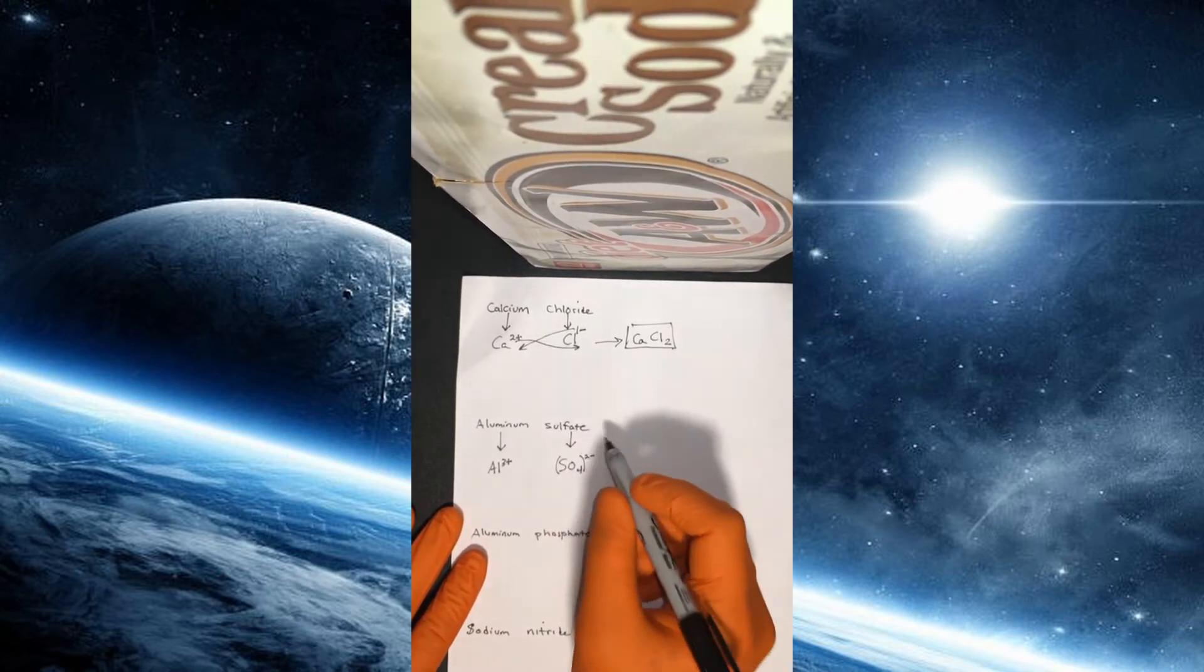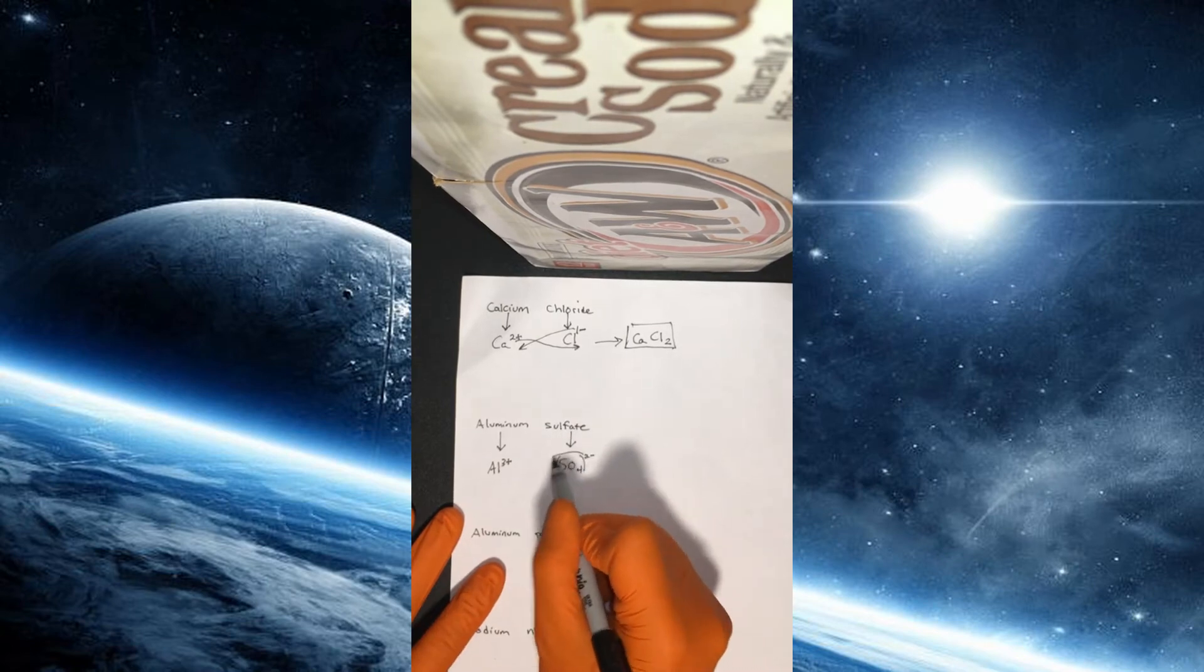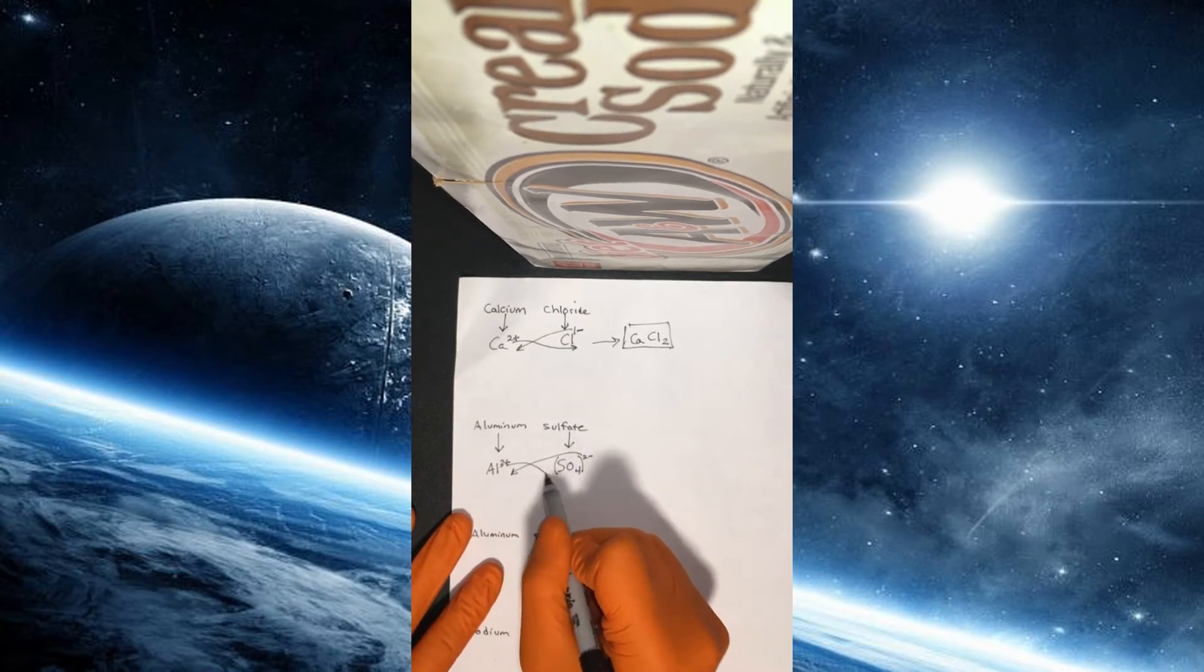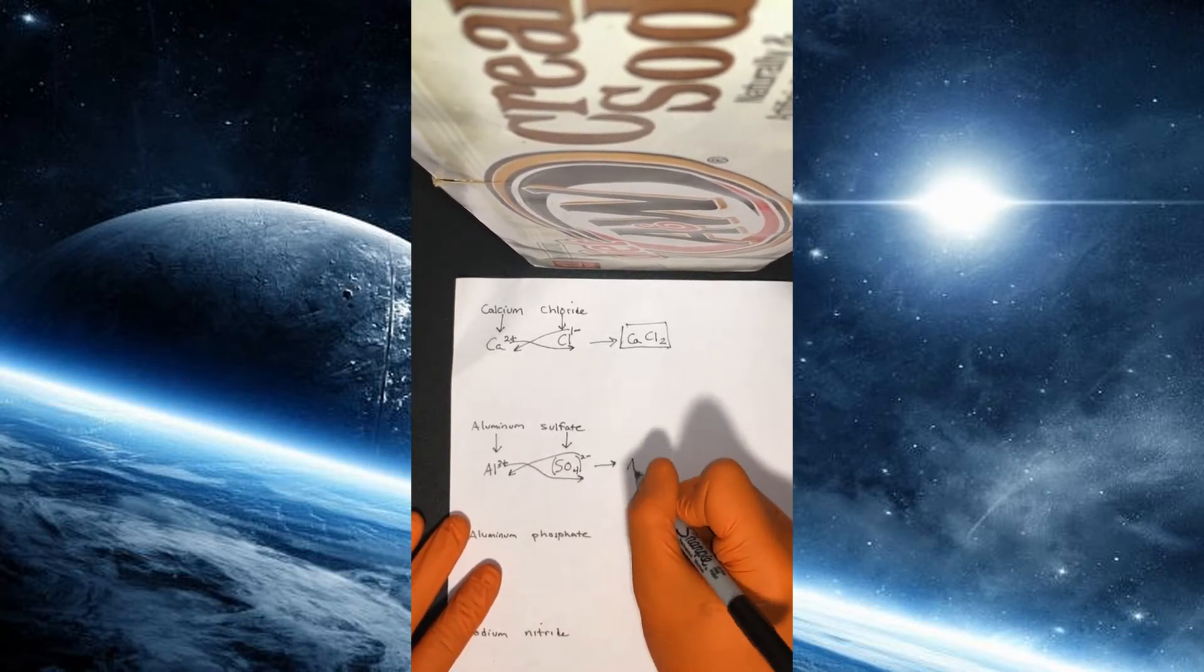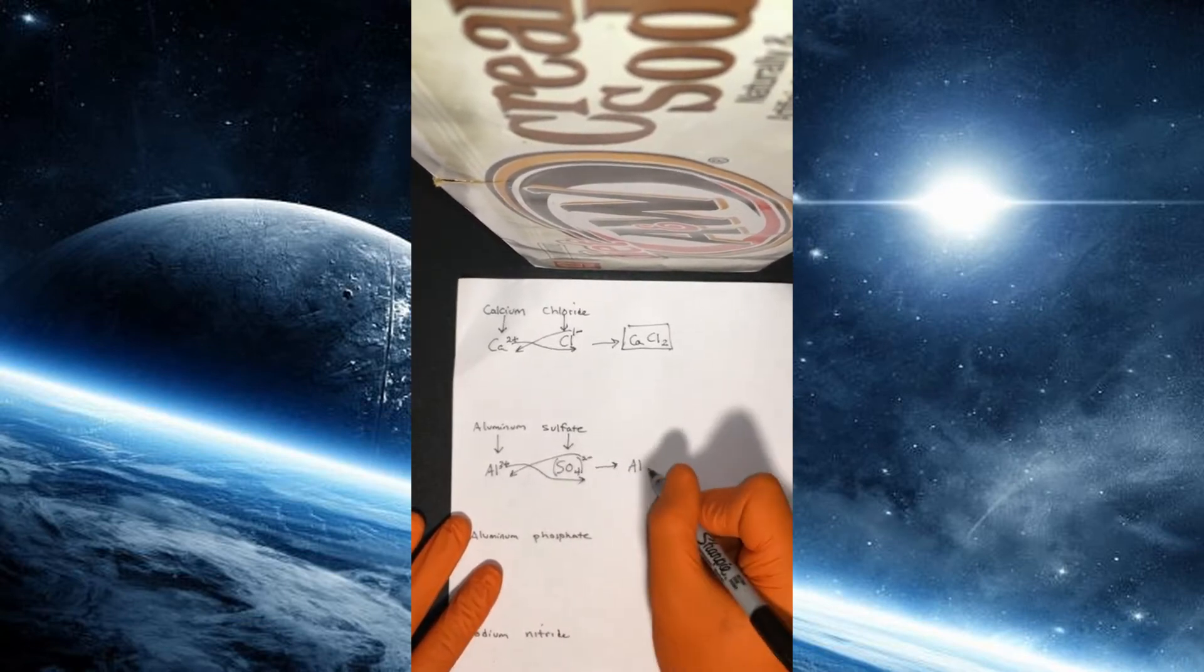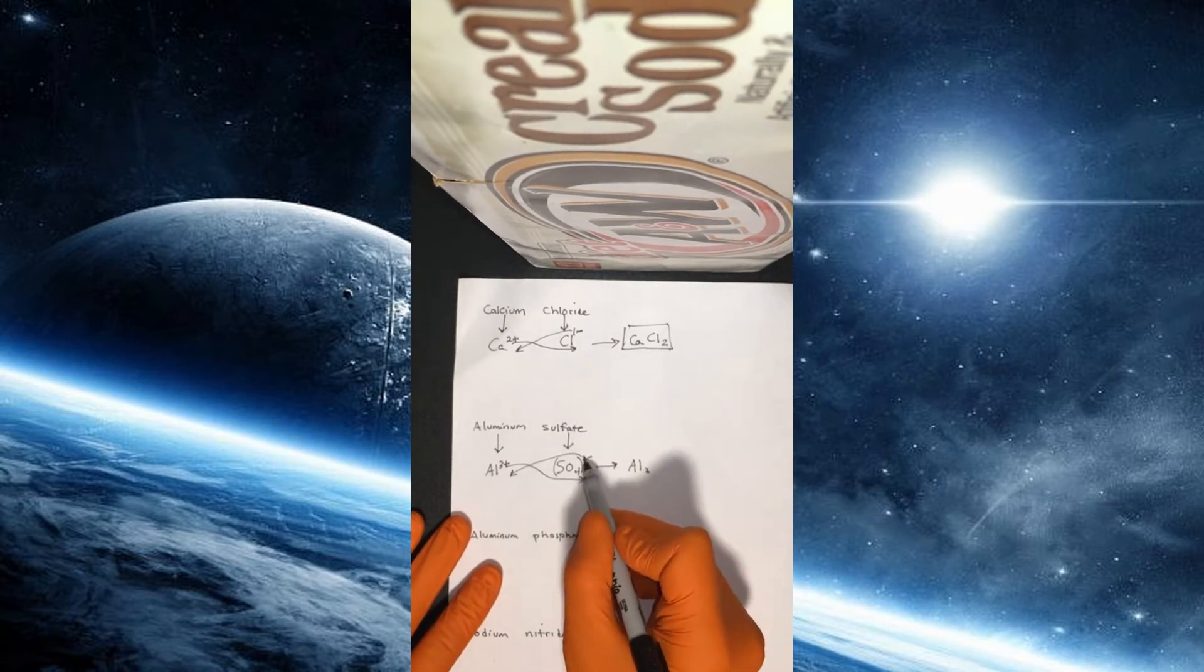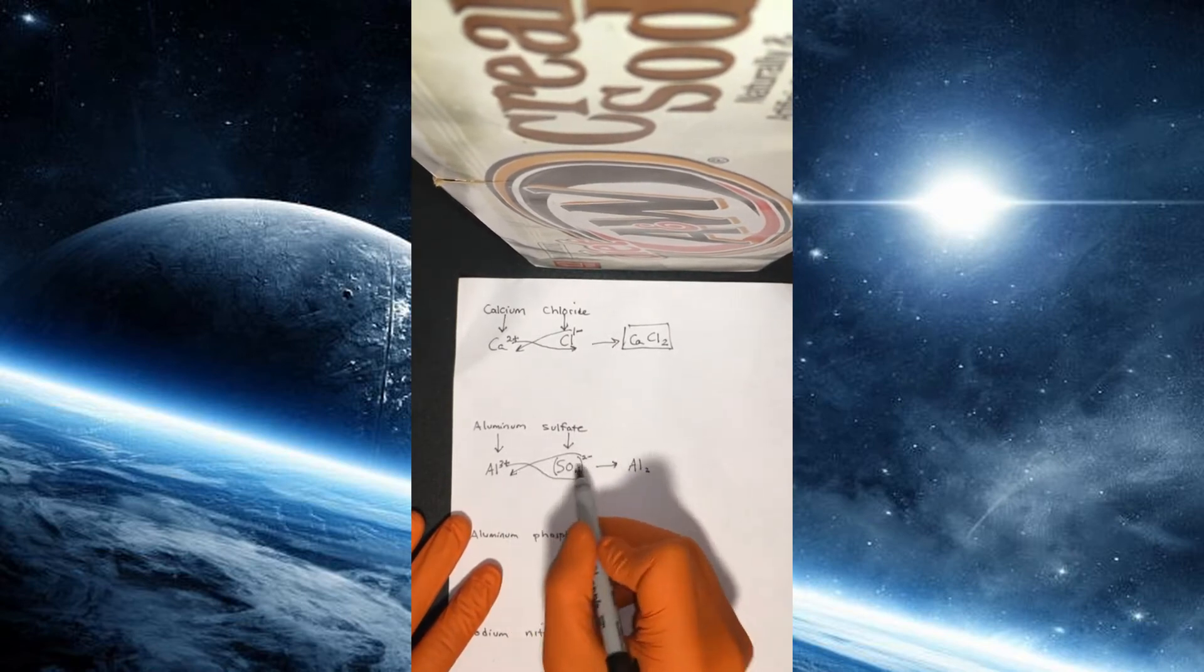So we're going to, as we did in the previous example, cross these numbers down like this. Notice we don't care about the sign of them. So our aluminum is going to have two of those, because the two comes from the minus two on the sulfate.